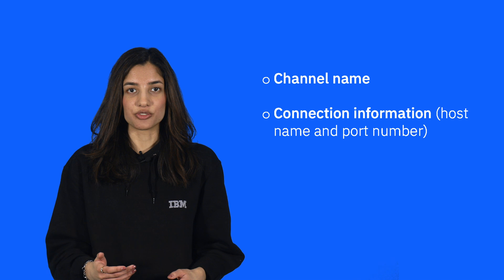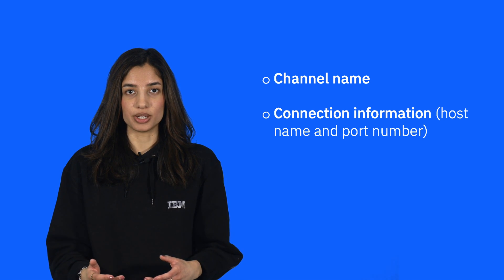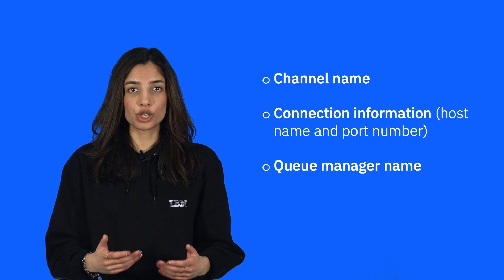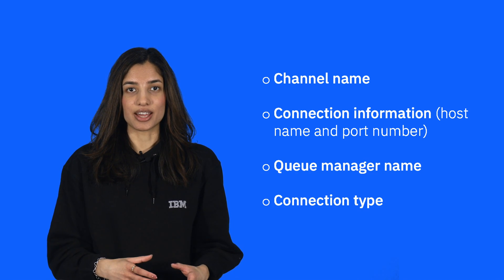JSON format CCDTs have a simple structure, and a minimal channel definition would be comprised of the channel name, the connection information — so the host name and the port number — the queue manager name, and the connection type.